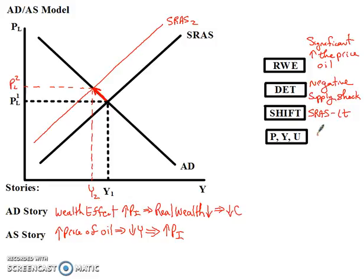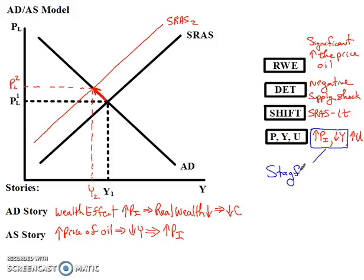So the final answer is that we're going to get inflation — prices are going to go up — gross domestic product is going to go down, and we're going to get an increase in unemployment. When you get higher prices and lower gross domestic product at the same time, that's the worst of all worlds. GDP and incomes are going down while inflation is going up — there's a term for this. We call this stagflation.